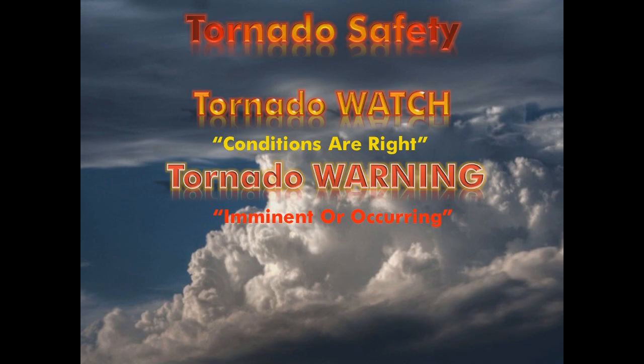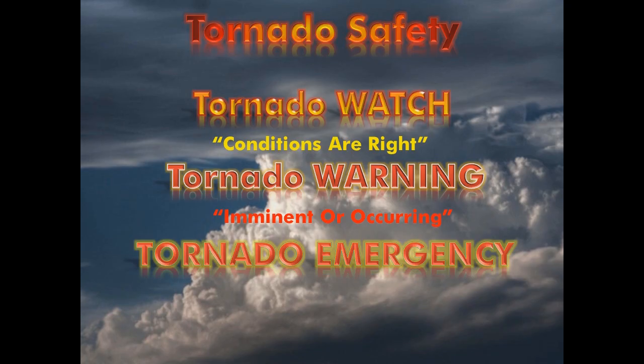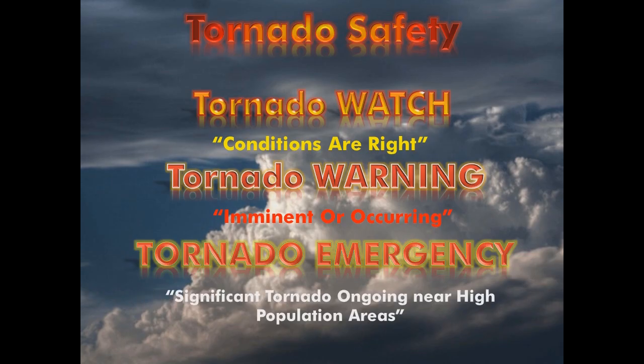A tornado warning means a tornado is either imminent or occurring. A different term is tornado emergency. This is being used more commonly these days. It's a statement issued in conjunction with a tornado warning regarding a storm that is producing a strong tornado in a high population area. It is special emphasis wording used to indicate that the storm is very dangerous and has caused or is causing serious damage, expected to continue, advising people to act immediately to seek shelter. A tornado emergency is issued along with a tornado warning and means a significant tornado is ongoing near a high population area.